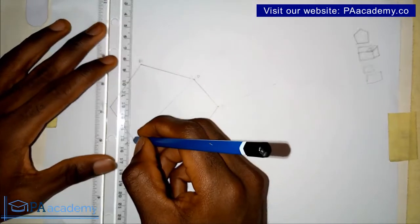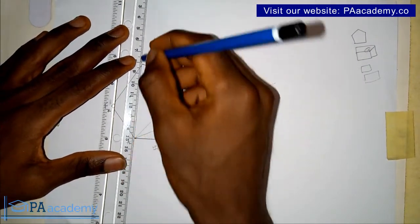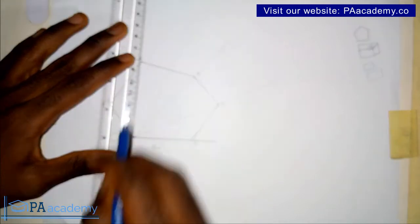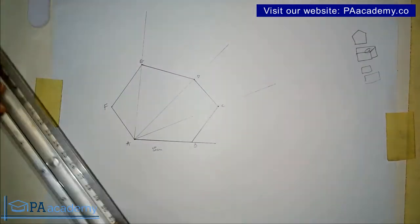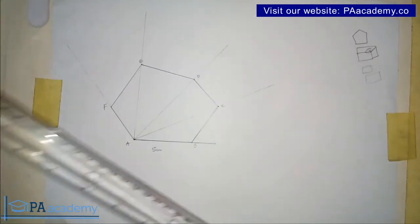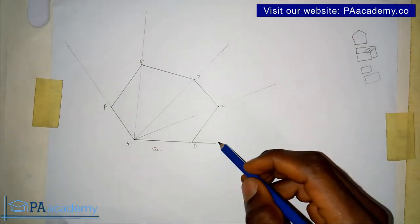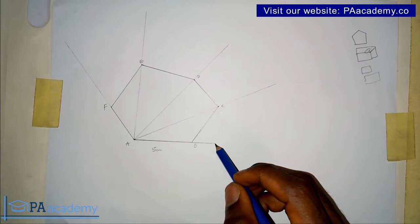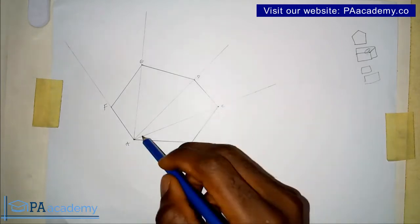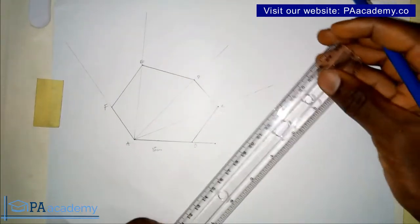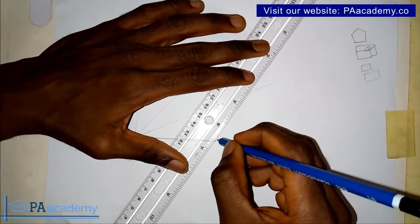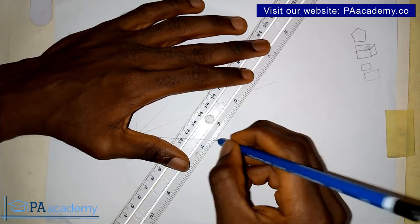Draw another line from A passing through point E, and extend all these lines outward. At the point where AB has been extended to seven centimeters, draw a line that is parallel to line BC so that it comes and touches the line passing through point C. Make sure your line is parallel.